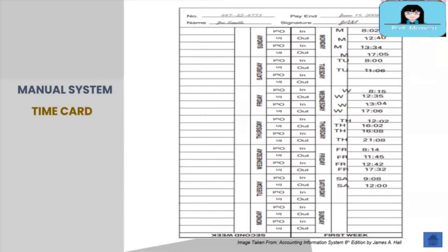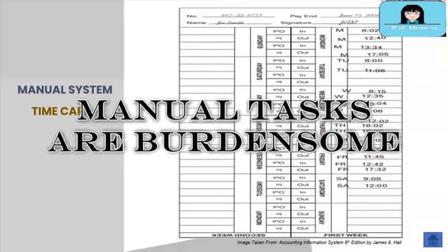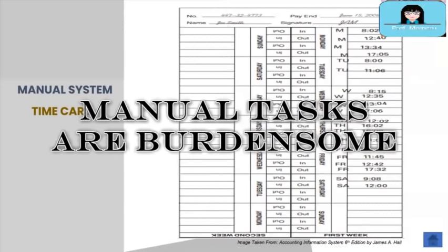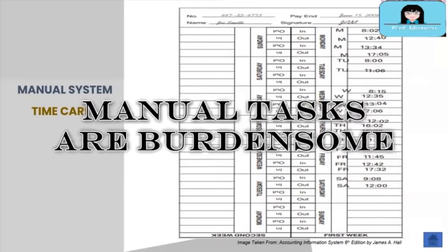Every week, for example, the timekeeper collects the time cards, manually calculates the regular and overtime hours worked, the absences, and lates for the week, and then sends it to the manager for approval. Once approved, the timekeeper prepares a report indicating hours worked by the employees for submission to payroll. Imagine the volume of tasks done and the time consumed to collect labor data for payroll processing.